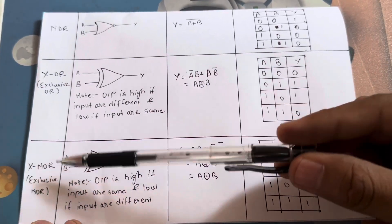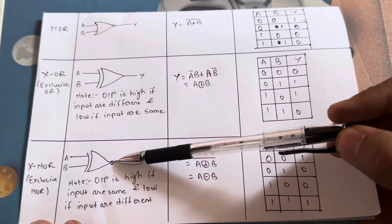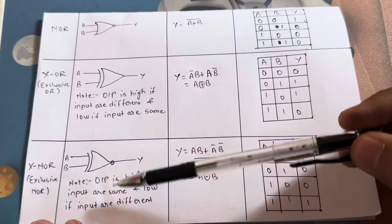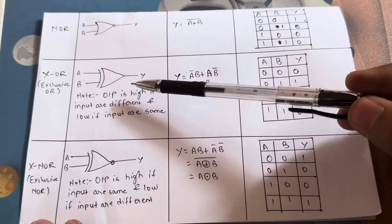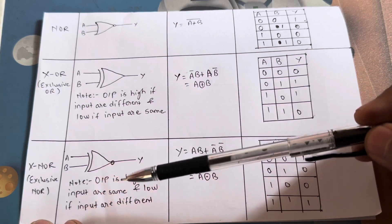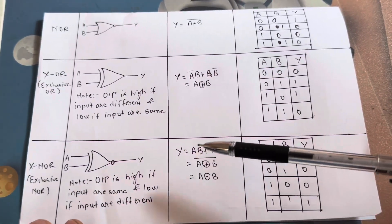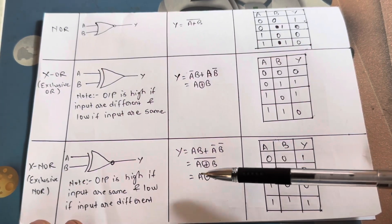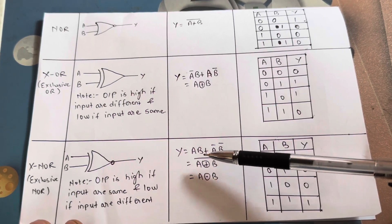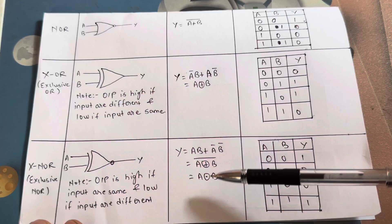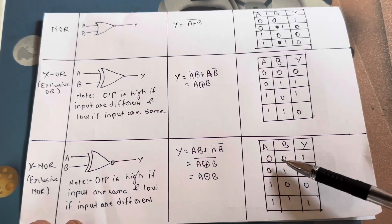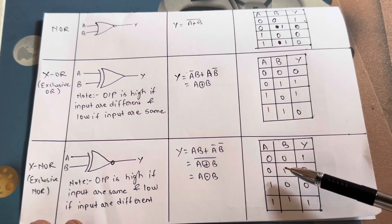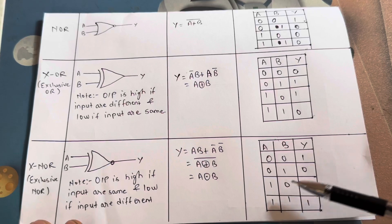This is the exclusive NOR gate — XNOR. For XNOR, the output is high if the inputs are the same, and low if the inputs are different. The algebraic function is A·B plus A-bar·B-bar, which is A XNOR B. So: 0,0 → output high (1) because inputs are the same; 0,1 → output low (0) because inputs are different; 1,0 → output low (0); and 1,1 → output high (1). This is the digital logic for XNOR.